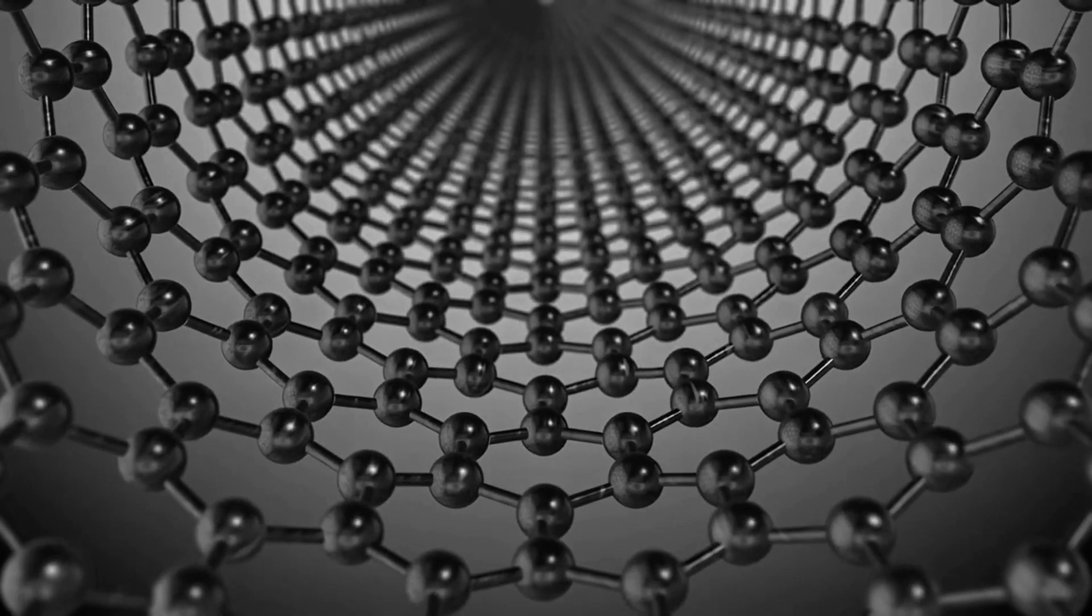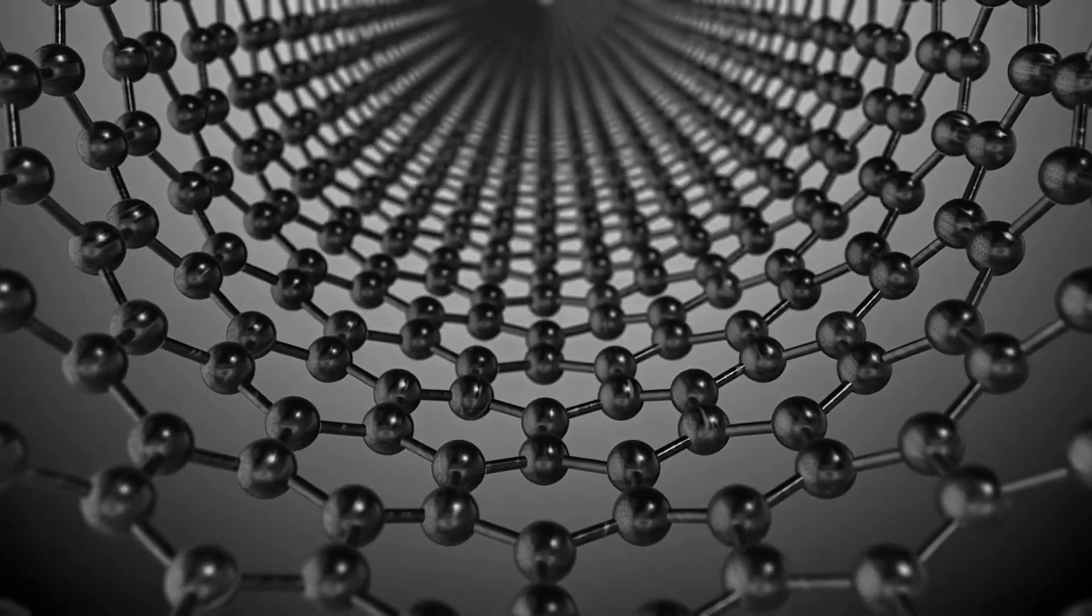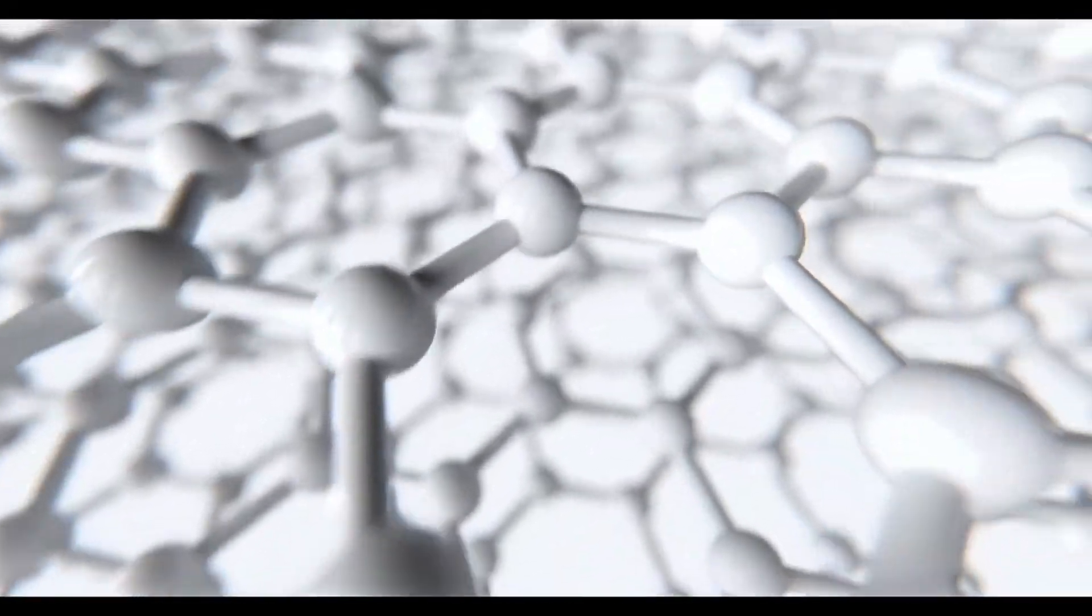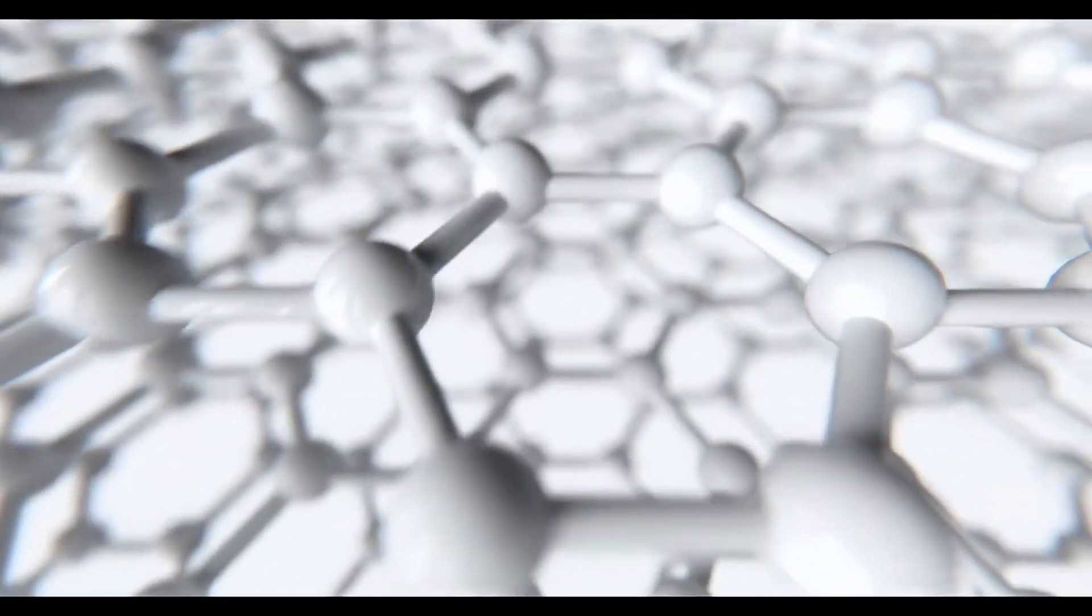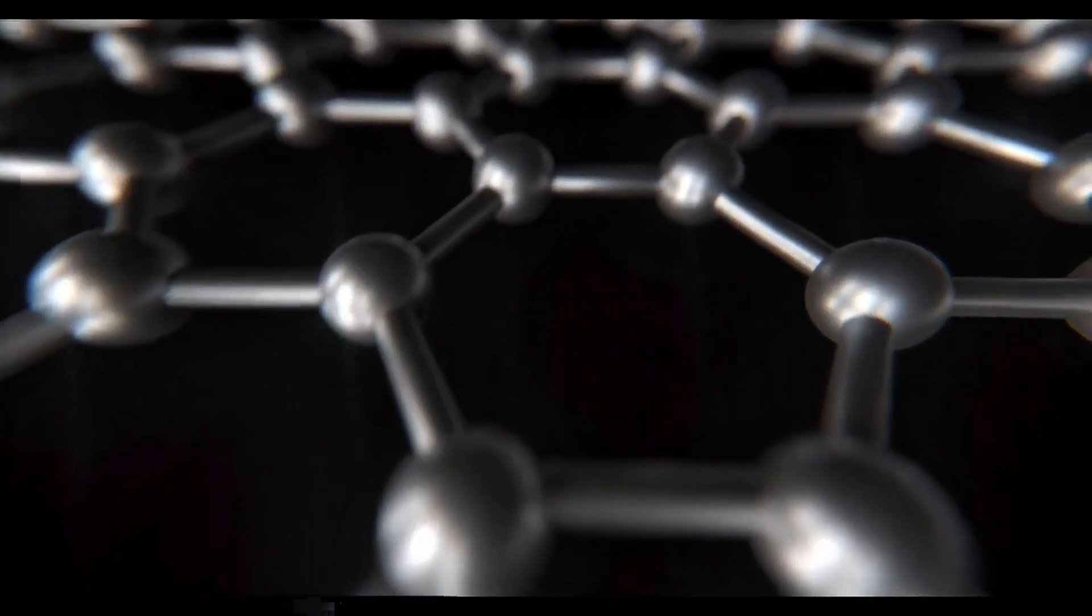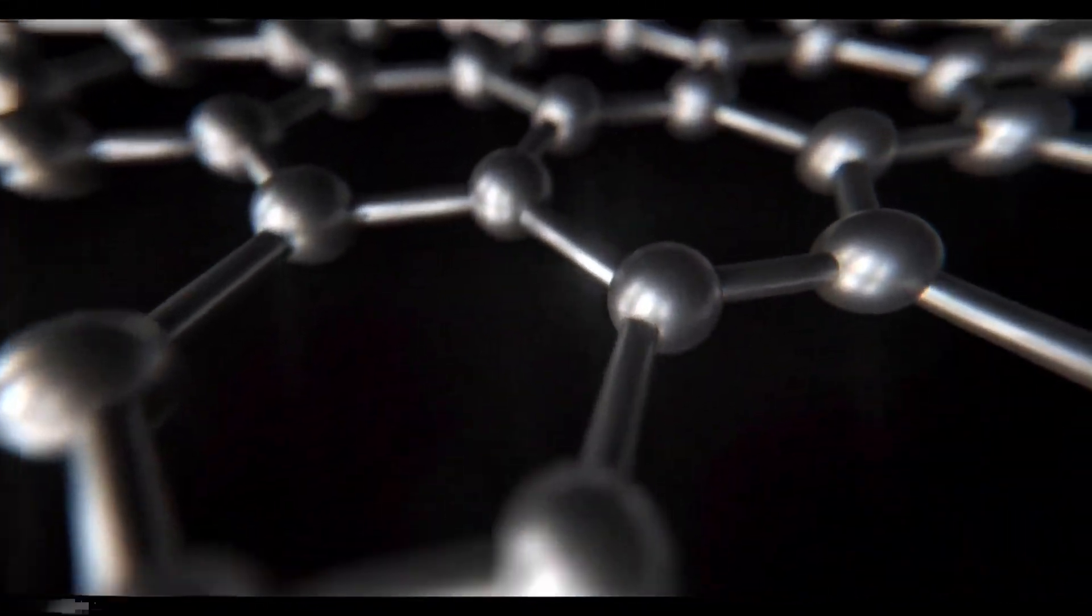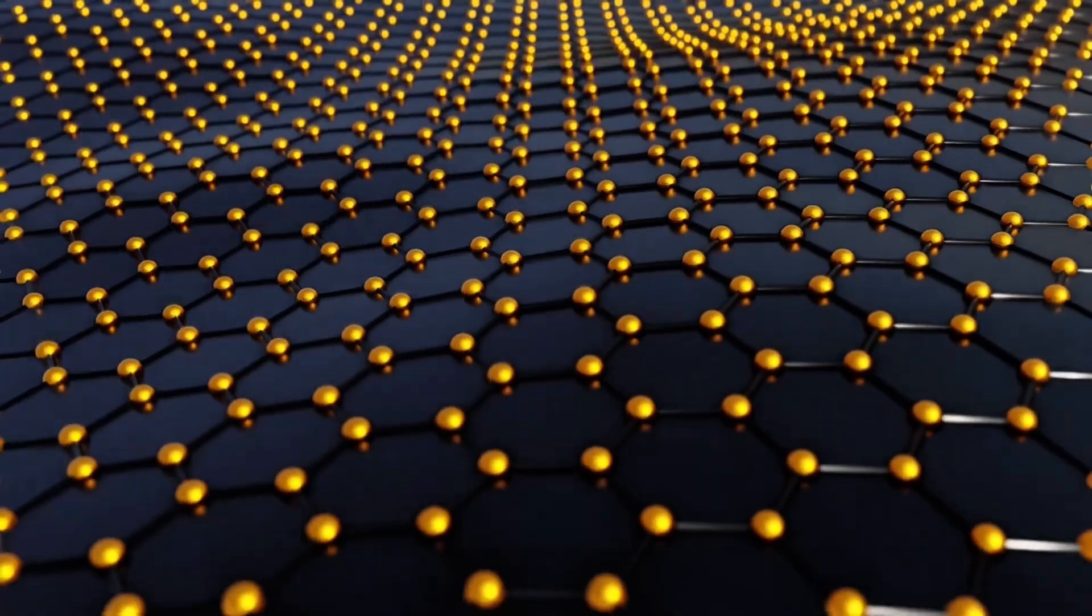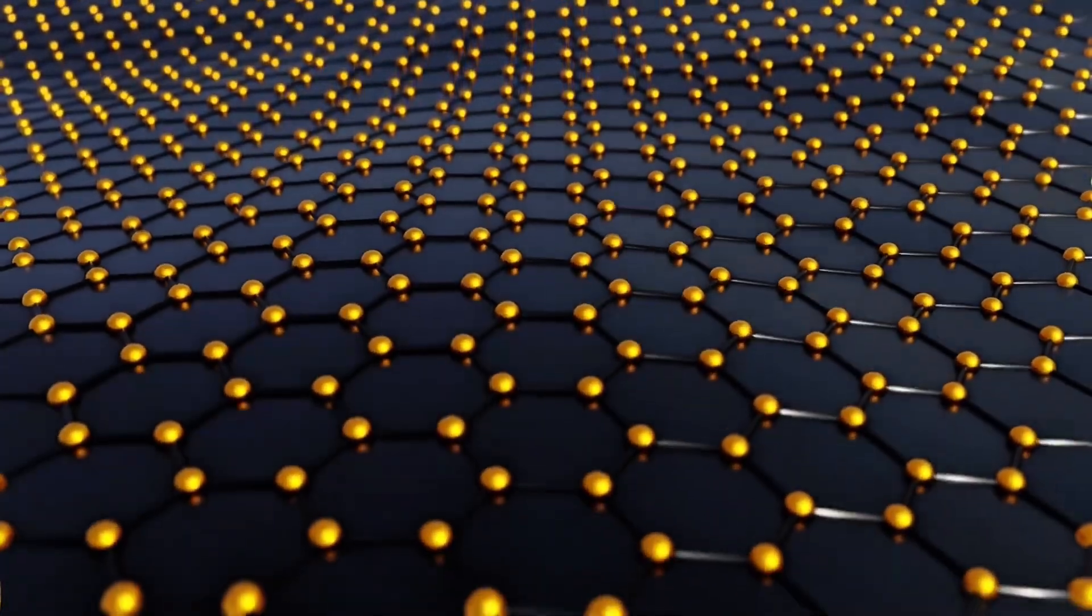In 2022, researchers at Manchester University managed to replicate the essence of this phenomenon in a laboratory, not with cosmic electric fields, but with something incredibly small: graphene. Graphene is a single layer of carbon atoms arranged in a hexagonal lattice, thin, flexible, yet so strong and conductive that it behaves almost like a miniature universe for electrons. In this delicate structure, scientists found a way to mimic the extreme conditions of Schwinger's theory. When they applied strong electric fields to the graphene sheet, they noticed something extraordinary.